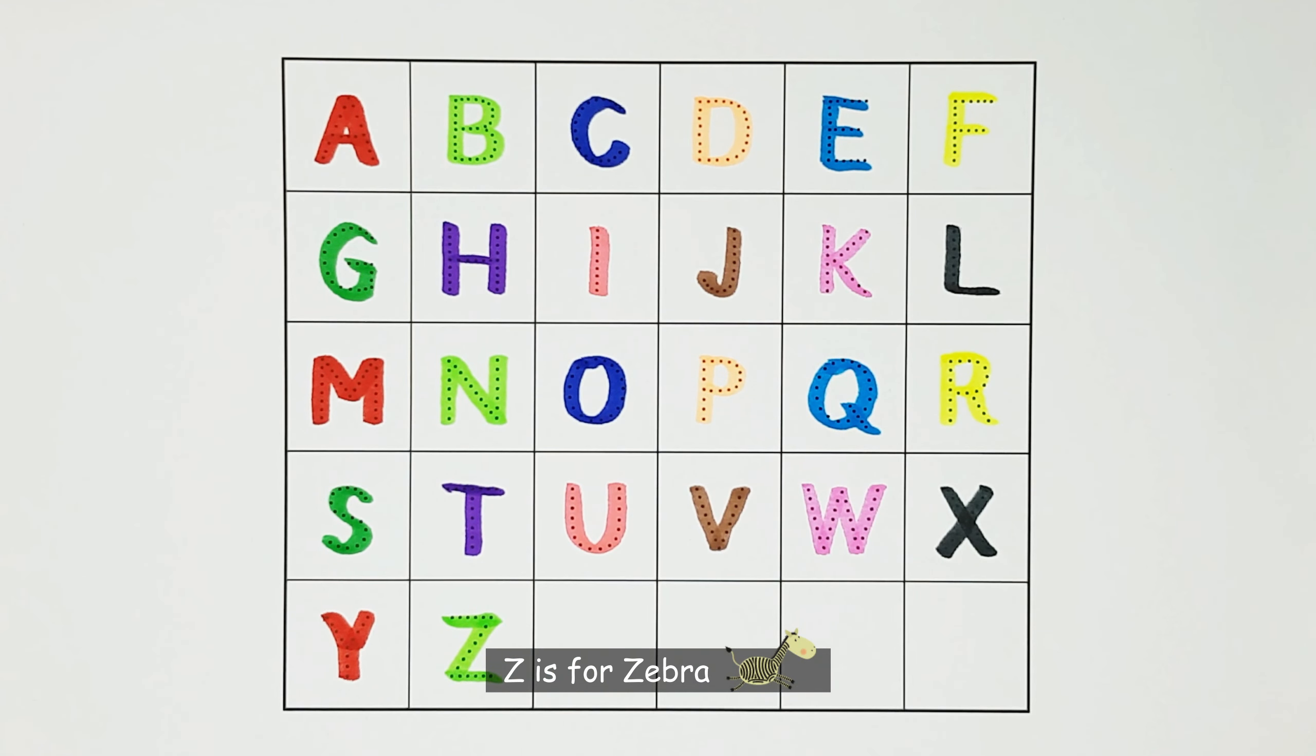N. N is for numbat. N. O. O is for ostrich. O.